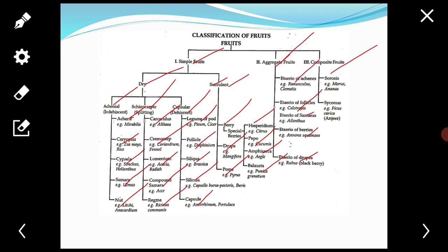One is the etaerio of achenes. Example: Ranunculus, Clematis. Second type of aggregate fruit, that is the etaerio of follicles. Example: Calotropis. Third is the etaerio of samaras. Example: Ailanthus. Fourth is the etaerio of berries. Example: Annona squamosa. Fifth is the etaerio of drupes. Example: blackberry, Rubus.